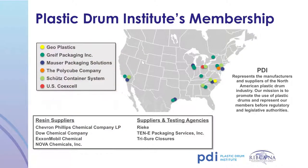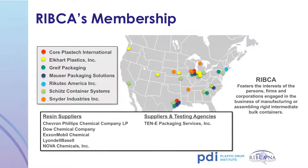The Plastic Drum Institute, or PDI, represents the manufacturers and suppliers of the North American plastic drum industry. Their mission is to promote the use of plastic drums and represent members before regulatory and legislative bodies. There are currently six plastic drum manufacturer members. The Rigid Intermediate Bulk Container Association, or RIBCA, fosters the interests of persons, firms and corporations engaged in manufacturing or assembling rigid intermediate bulk containers.